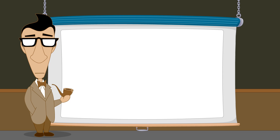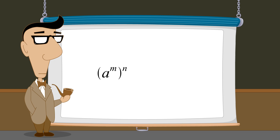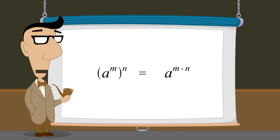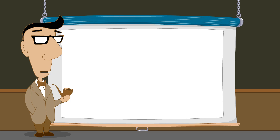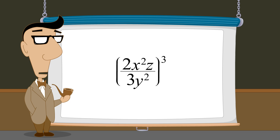So far we have seen that any term with an exponent of m raised to the nth power is equivalent to that term with the two exponents multiplied, and that this rule holds regardless of the signs of the exponents. In the next lecture we will see what happens when products or quotients of exponential terms are raised to powers.